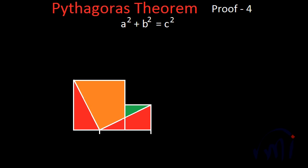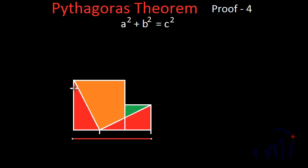Both these triangles are congruent because the total length from this point to this point was a plus b, and this much is a, which means this remaining length is actually equal to b. And this is a — it is actually part of the original square. That means this is also a right angle triangle with sides equal to a and b, which are adjacent to the right angle.